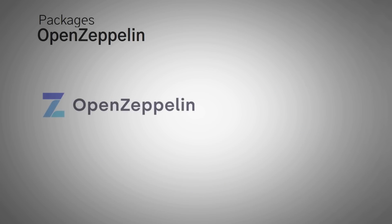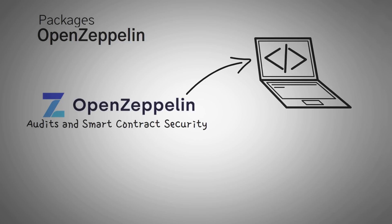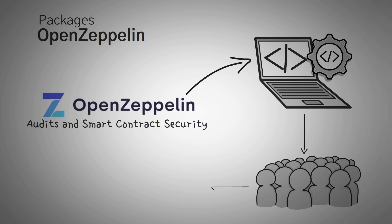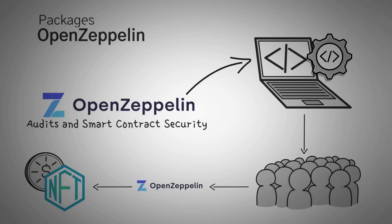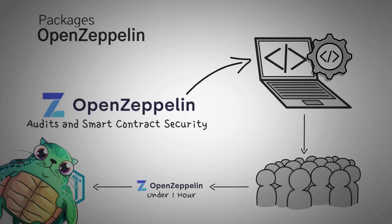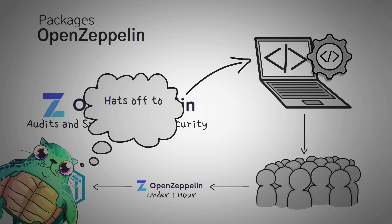The last package we have is from OpenZeppelin. OpenZeppelin is a company that specializes in audits and smart contract security, and they get paid a ton for it. But they also give away a bunch of free audited code for people to build with. If you want to make a token or create an NFT project, using pre-configured code from OpenZeppelin can help you launch both of these projects in under an hour. My hat's off to OpenZeppelin for giving us great, clean, and very useful contract frameworks to build upon.